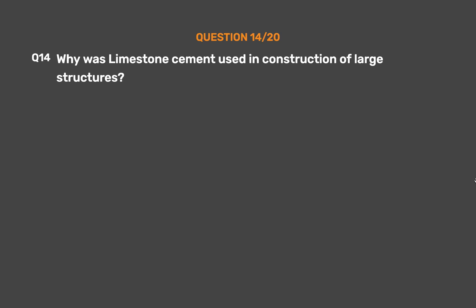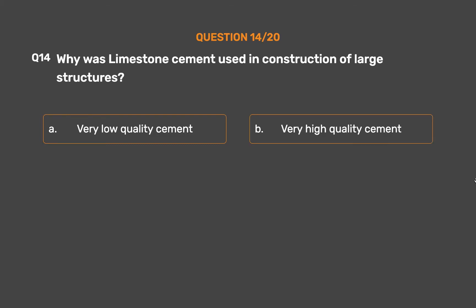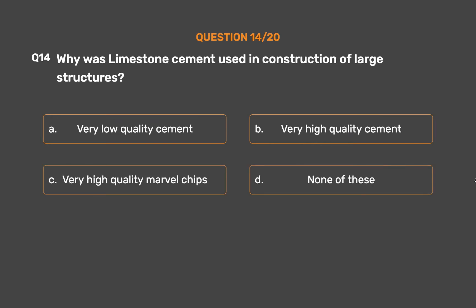Question No. 14: Why was limestone cement used in the construction of large structures? Option A: Very low quality cement. Option B: Very high quality cement. Option C: Very high quality marble chips. Option D: None of these.